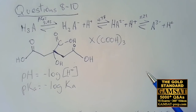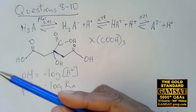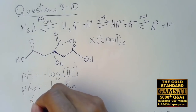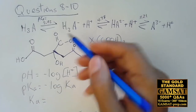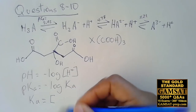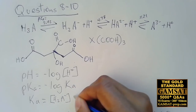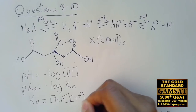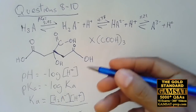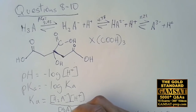For example, Ka is the product of the products divided by the reactant. We put square brackets to indicate concentration in moles per liter. The products would be divided by the concentration of the reactant H₃A, so Ka equals [H₂A⁻][H⁺] / [H₃A].